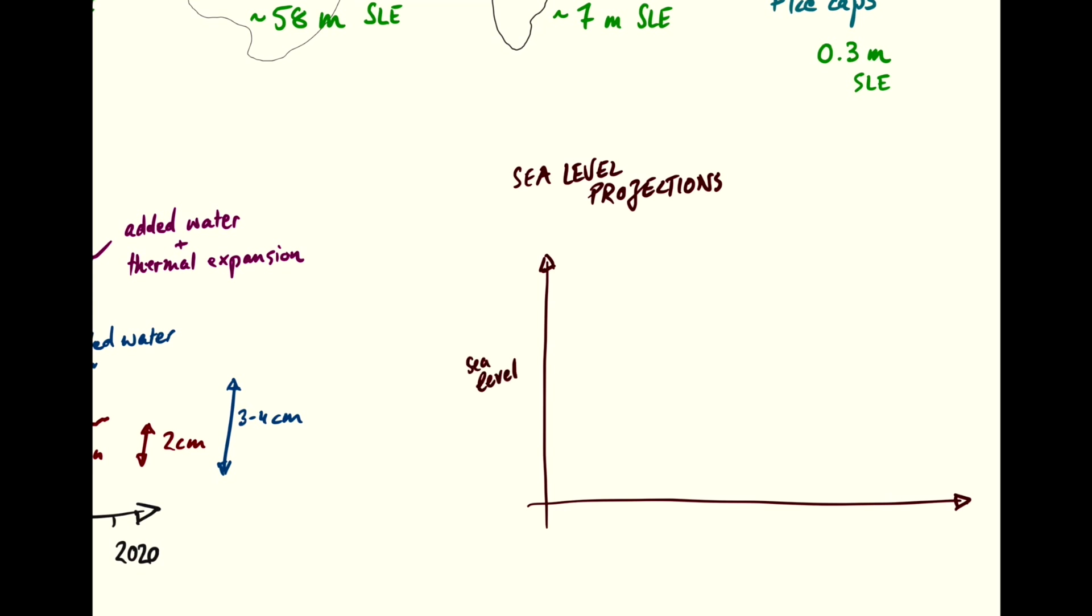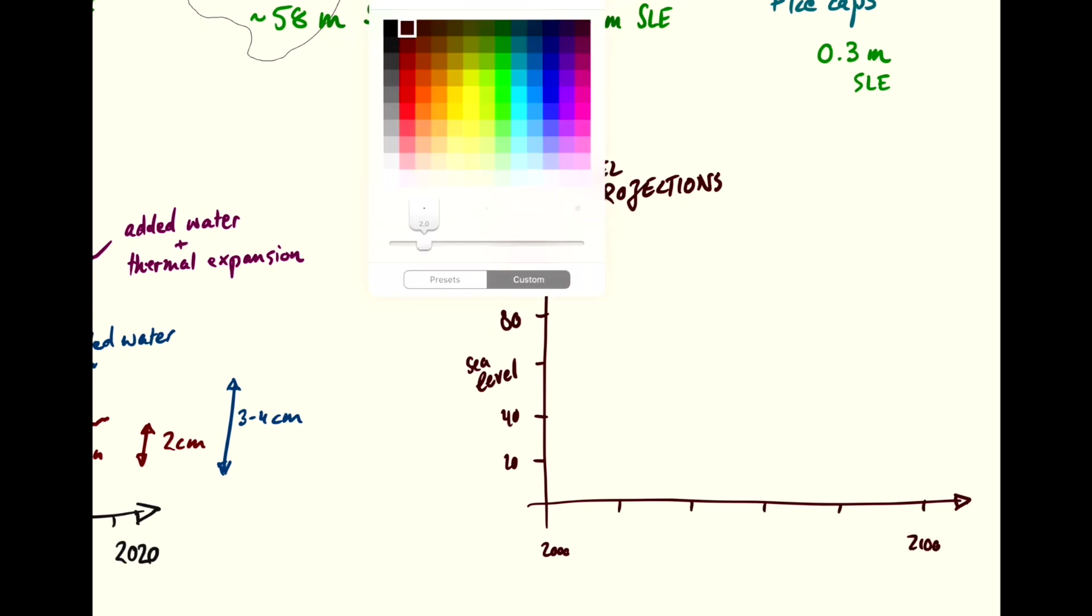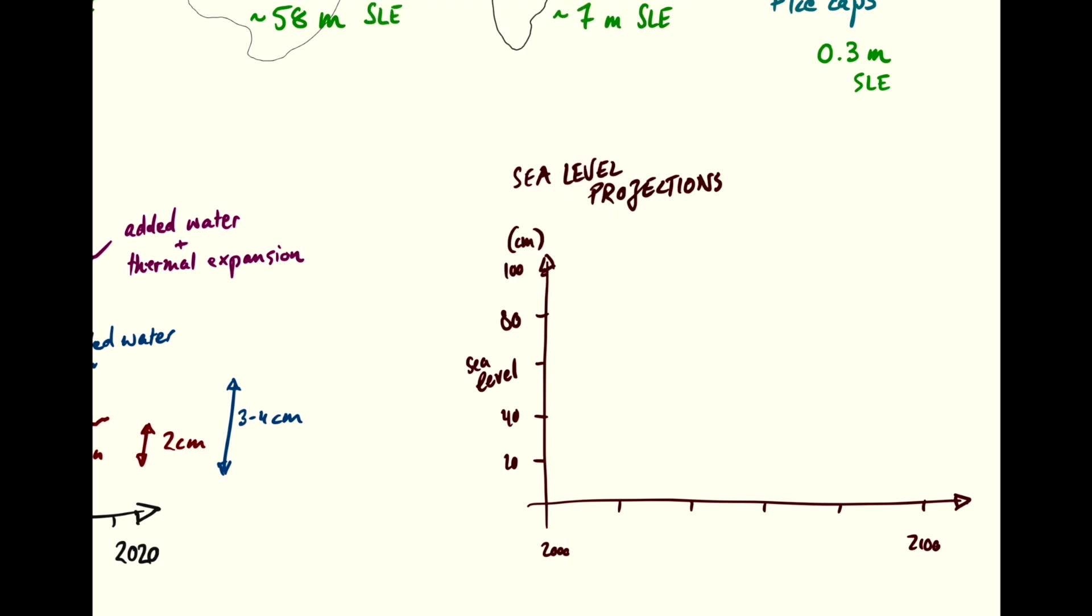So if we have sea level on the vertical axis here, and I'm drawing 20, 40, 60, 80, 100, and this is in centimeters, and let's start at about 2000.